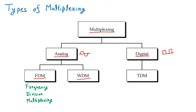WDM stands for Wave Division Multiplexing. A wave here means a light wave. Suppose three light waves come and are merged together and sent through one medium. In networking, waves are light and they travel through optical fiber cable. Transmitting three light waves together through optical fiber is called WDM.